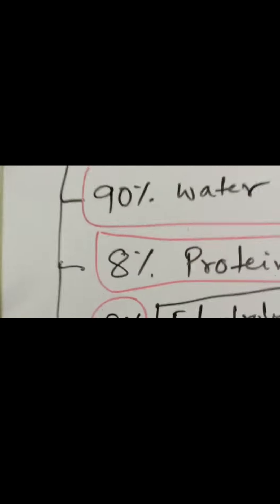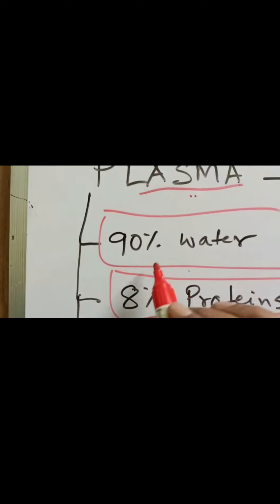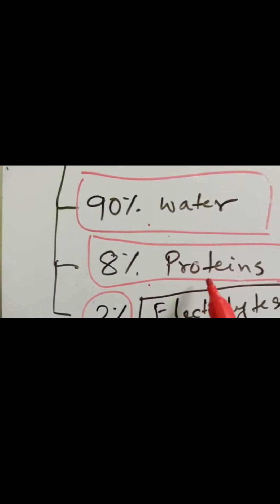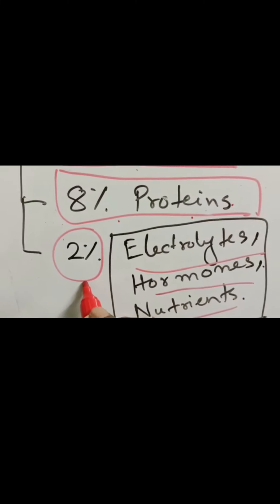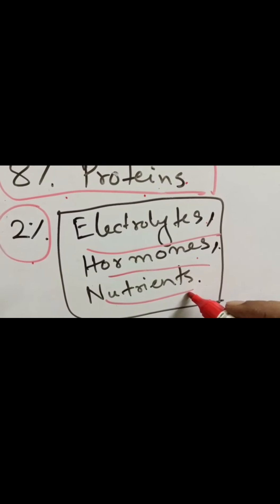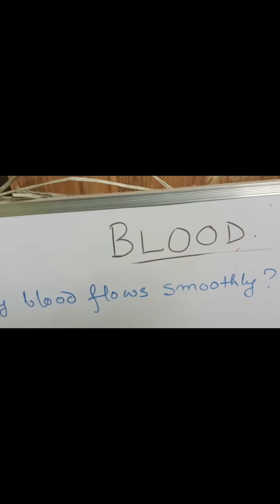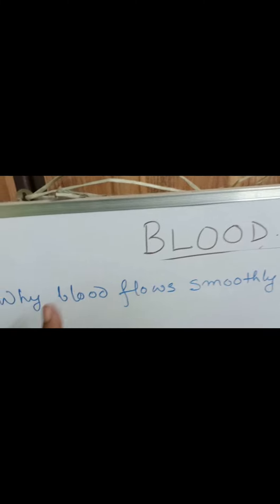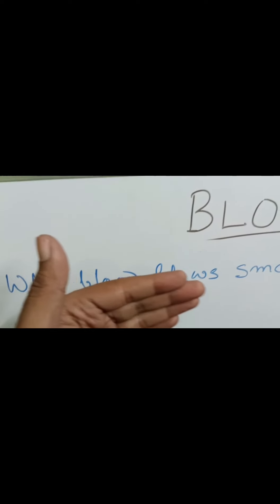What is the composition of plasma? Plasma has 90% water, 8% proteins, and 2% occupied by electrolytes, hormones, and nutrients. One important question: why does blood flow smoothly? The answer is plasma. Because of the plasma, blood flows smoothly.